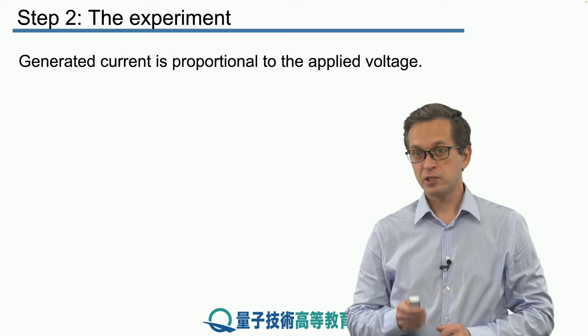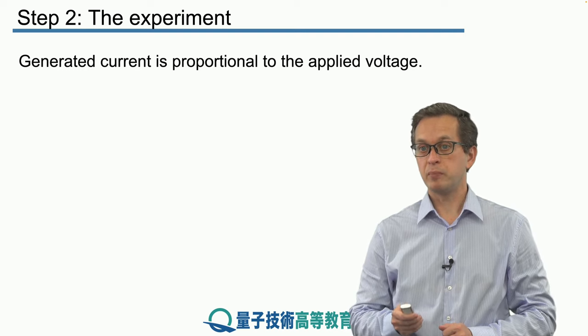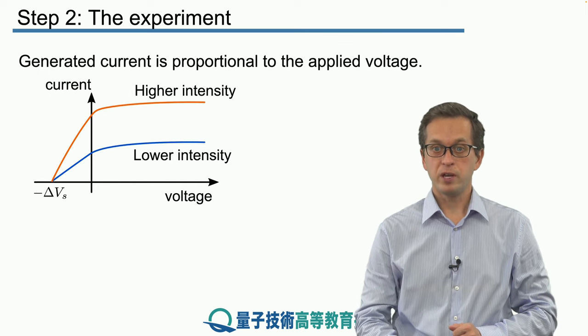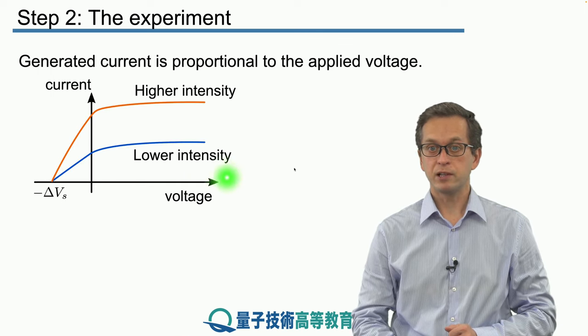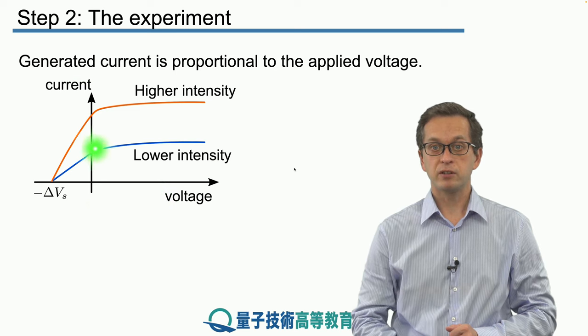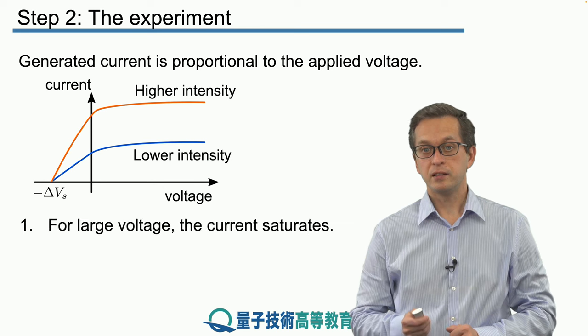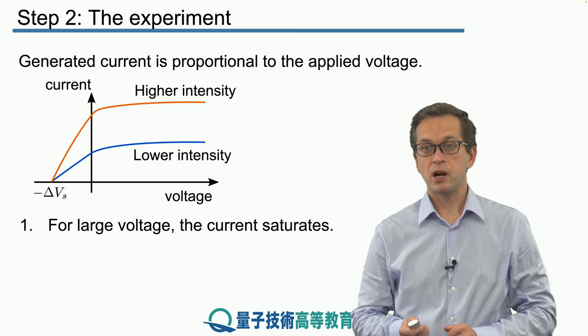He noted that the current generated was proportional to the applied voltage in the following way. So here we are plotting voltage on the horizontal axis and the measured current on the vertical axis. And Hertz noted that for large voltage the current saturated.